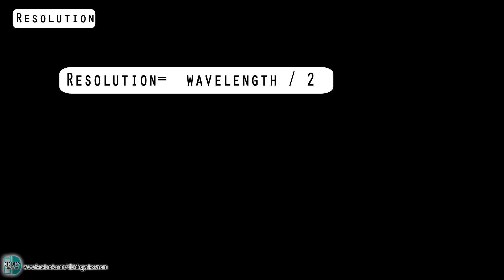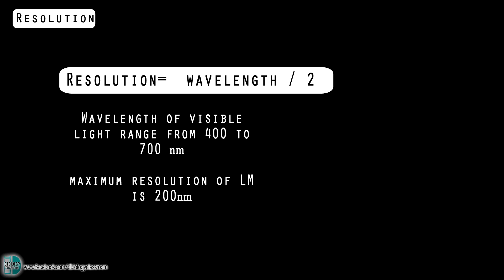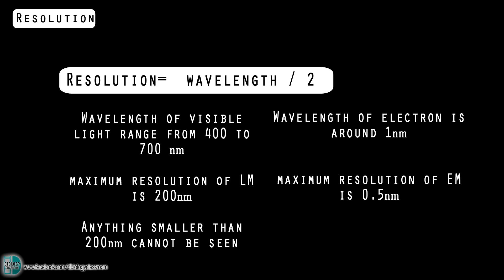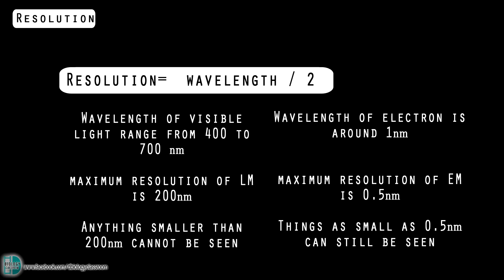Resolution is half of the wavelength. Wavelength of visible light ranges from 400 to 700 nanometers. So the maximum resolution of a light microscope is 200 nanometers. Anything smaller than 200 nanometers cannot be seen under the light microscope. Wavelength of electron is around 1 nanometer. So the maximum resolution of electron microscope is 0.5 nanometers. This means any structures that are as small as 0.5 nanometers can still be seen under the electron microscope.